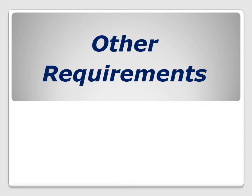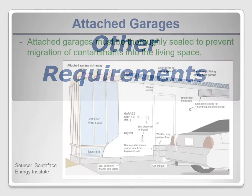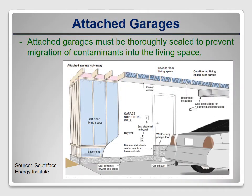ASHRAE 62.2 covers some other topics beyond local exhaust and whole building ventilation. They all relate to ensuring good air quality. ASHRAE 62.2 requires detailed steps to ensure that attached garages are sealed to prevent migration of contaminants into the adjacent living spaces.